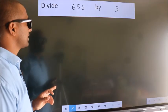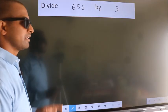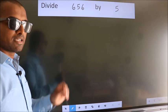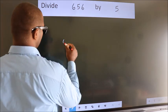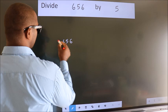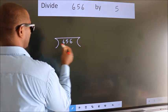Divide 656 by 5. To do this division, we should frame it in this way: 656 here, 5 here.